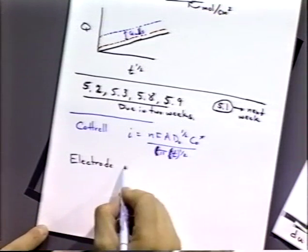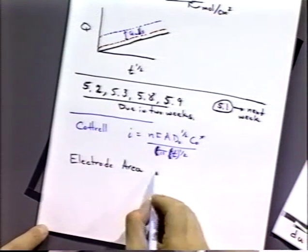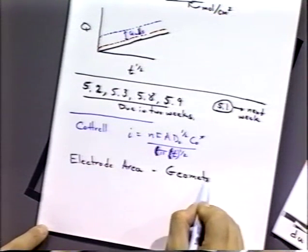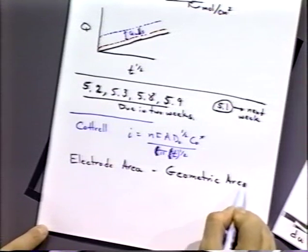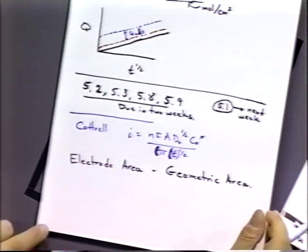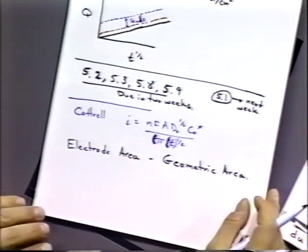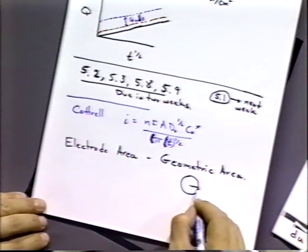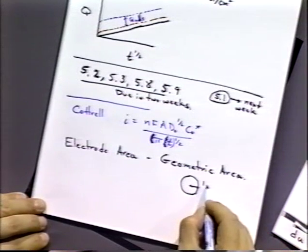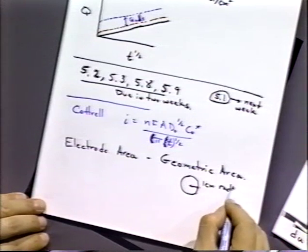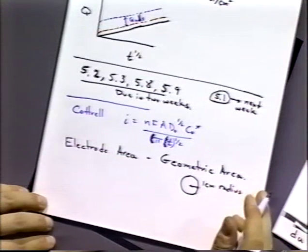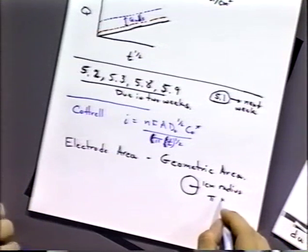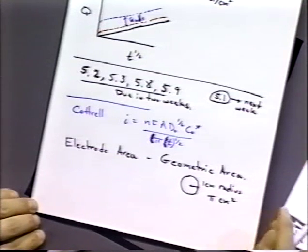The problem of electrode area is not a trivial one, even though it sounds like it. We can think about electrode area in a couple of different ways. One is we can think about the geometric area. It's often something that people would say, well, I have an area, it's got a radius of one centimeter, and so my area is pi.